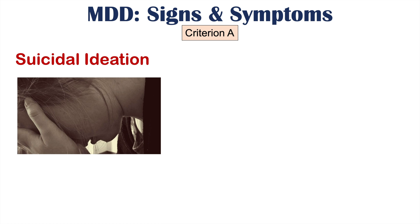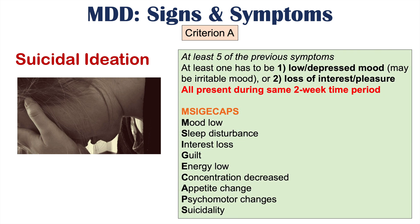Criterion A contained all those signs and symptoms. In order to officially say that a patient has major depressive disorder, they must have at least five of those symptoms. At least one must be either a low, depressed, or irritable mood, or a loss of interest or pleasure — plus at least four others. All of these must be present most of the day, nearly every day during the same two-week time period.